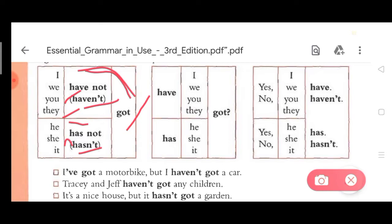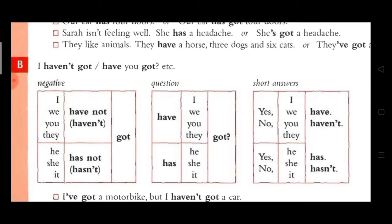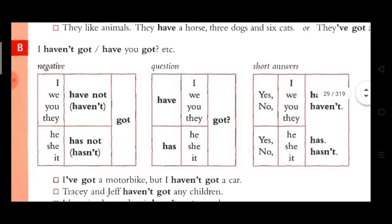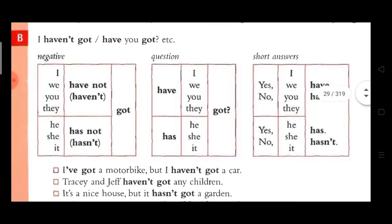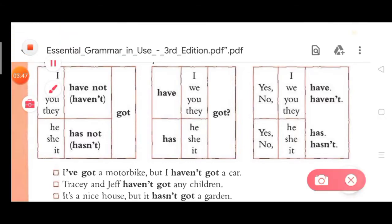For questions, you say: 'Have I got a car?', 'Have we got a car?', 'Has he got a car?', 'Has he got a headache?' For short answers, when you are asked a question, you answer: 'Yes, I have' or 'No, I haven't.'